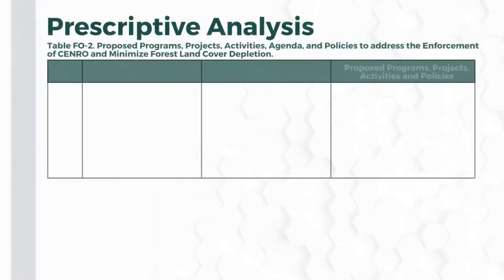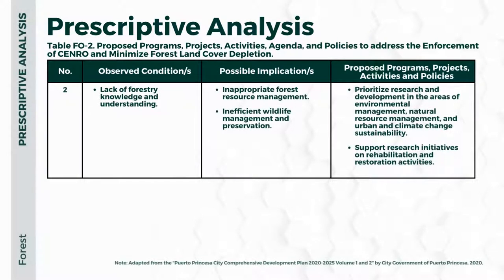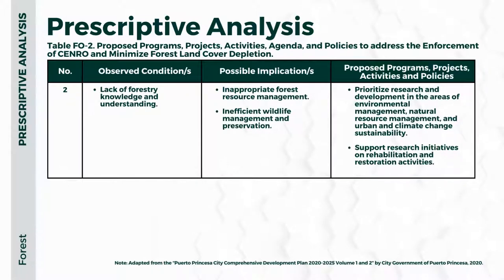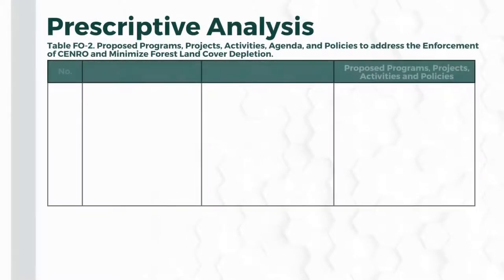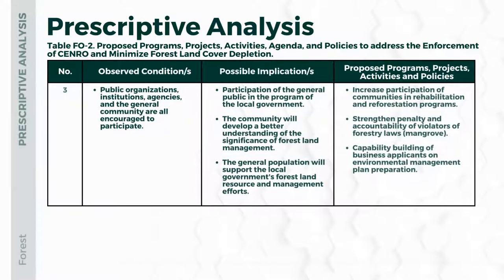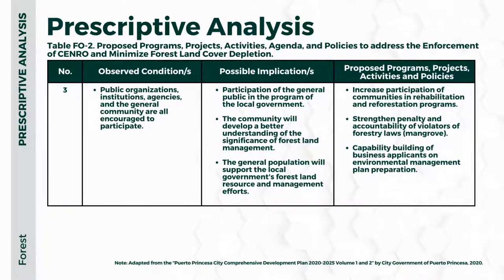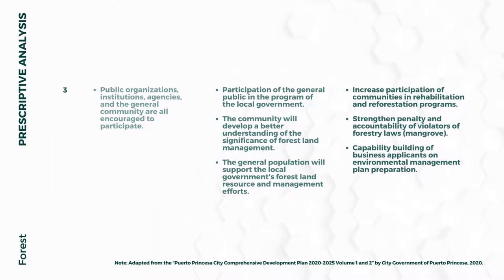The second observed condition is the lack of forestry knowledge and understanding, with possible implications of inappropriate forest research, inappropriate forest resource management, and inefficient wildlife management and preservation. Proposed programs include prioritizing research and development and supporting research initiatives on rehabilitation and restoration. The third condition concerns public organizations, institutions, agencies, and the general community. Proposed programs include increasing participation of communities, strengthening penalty and accountability of violators, and capability building of business applicants on environmental management plans.